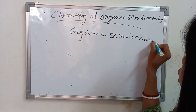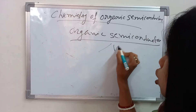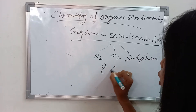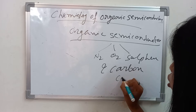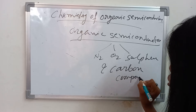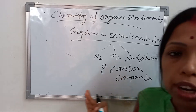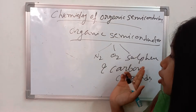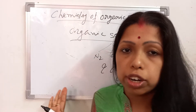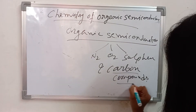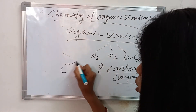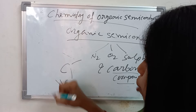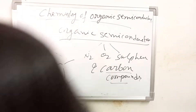Organic semiconductor consists of nitrogen, oxygen, and sulfur along with carbon compounds. Mainly the carbon compounds are important, and apart from this, nitrogen, oxygen, and sulfur contents are also present in organic semiconductors. If you consider the carbon compound, these are bonded with each other — single bond and double bond carbon compounds are there.